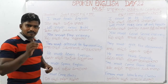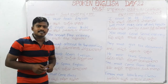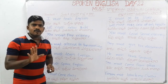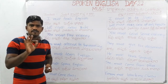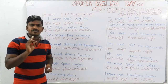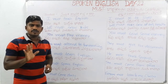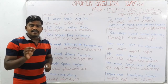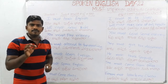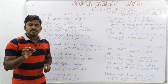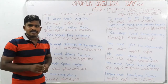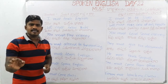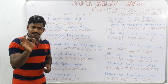After modal verbs we always place the V1 form. The modal verbs are: can, could, will, would, should, may, might, need to, has to, there to, and must. After all of these modals, we use the V1 form.